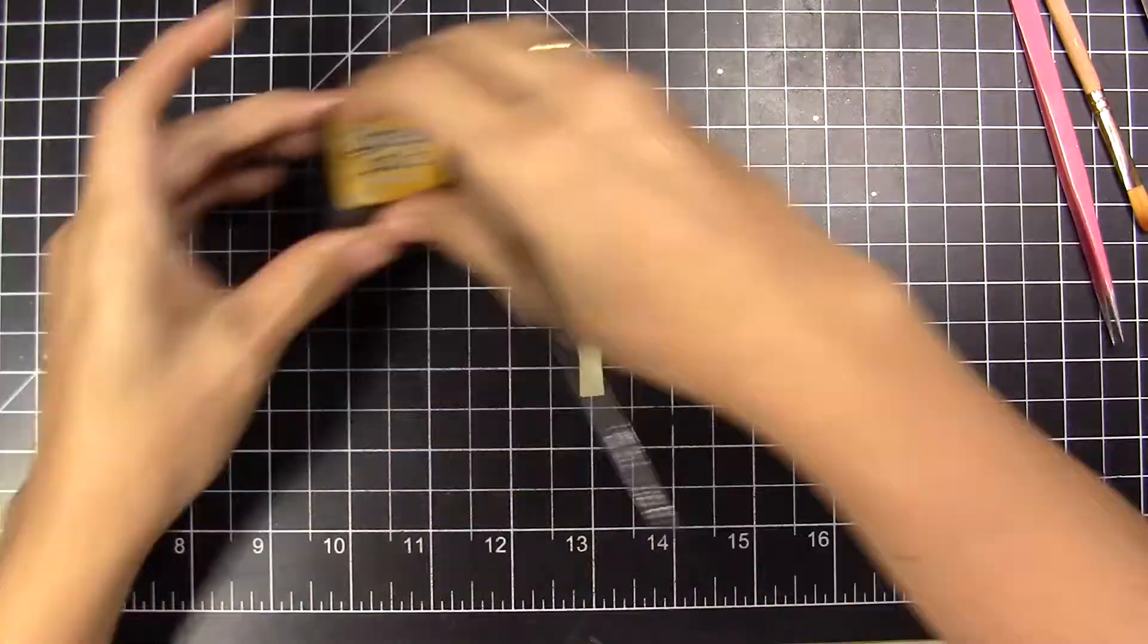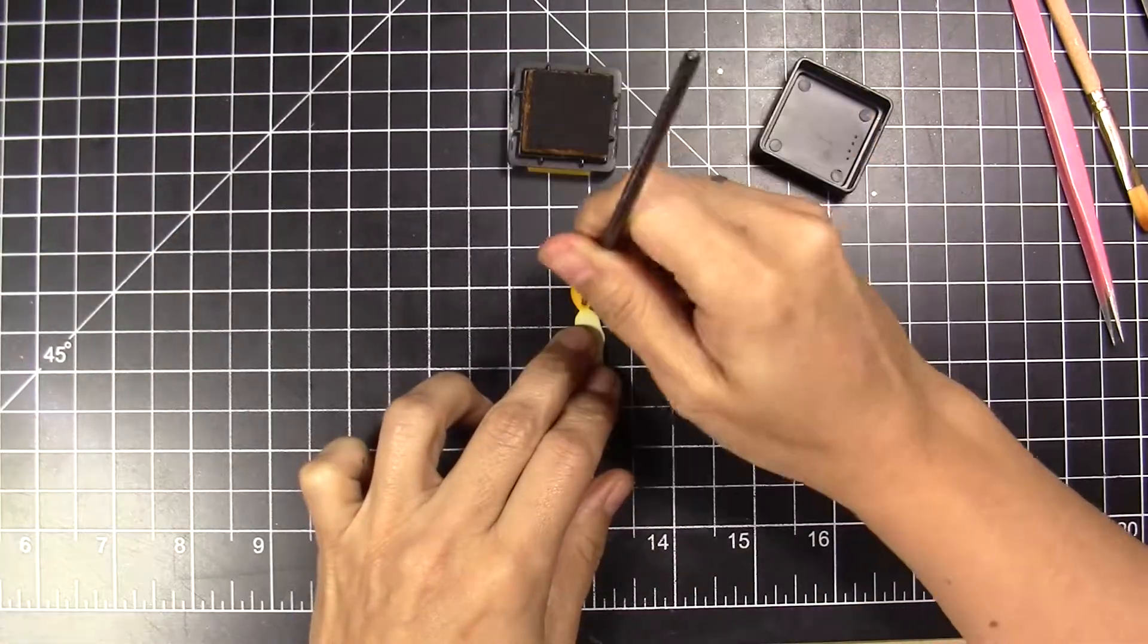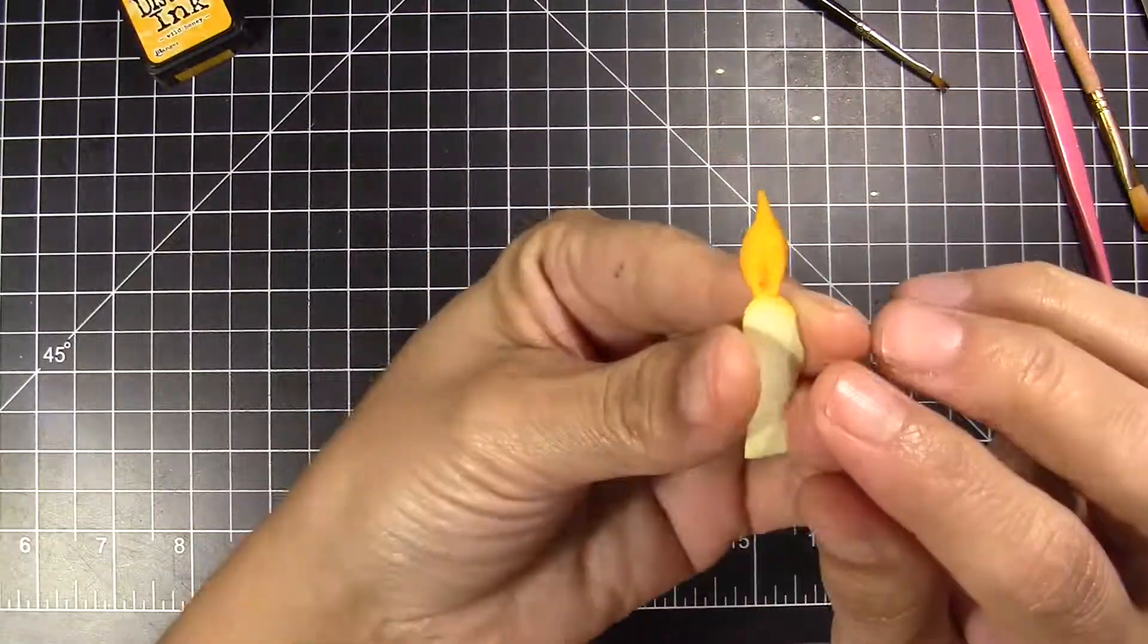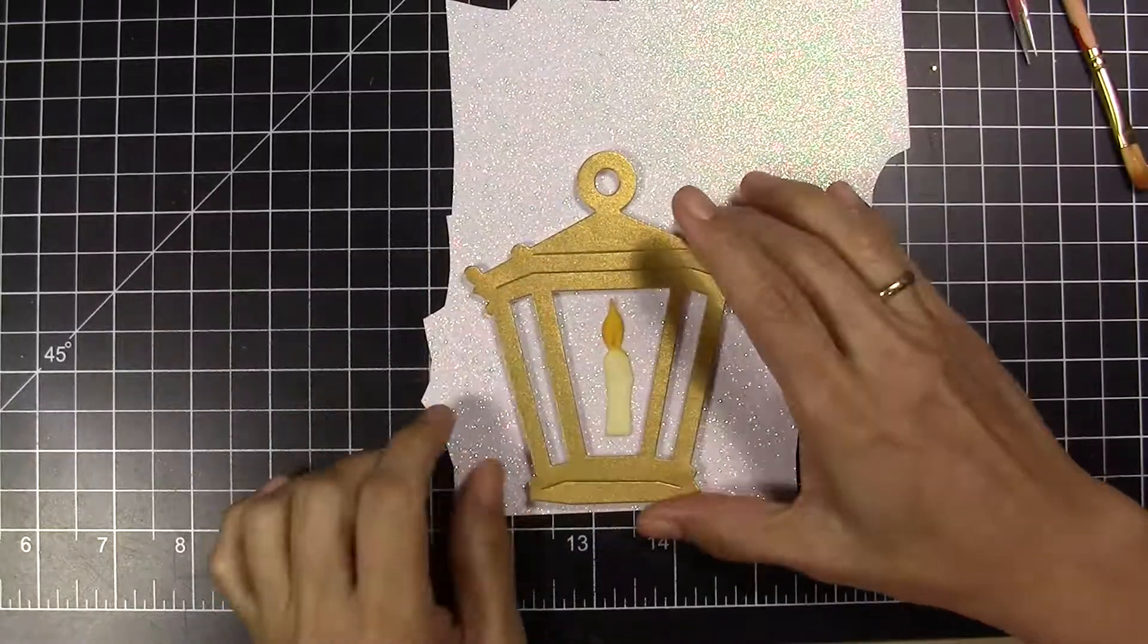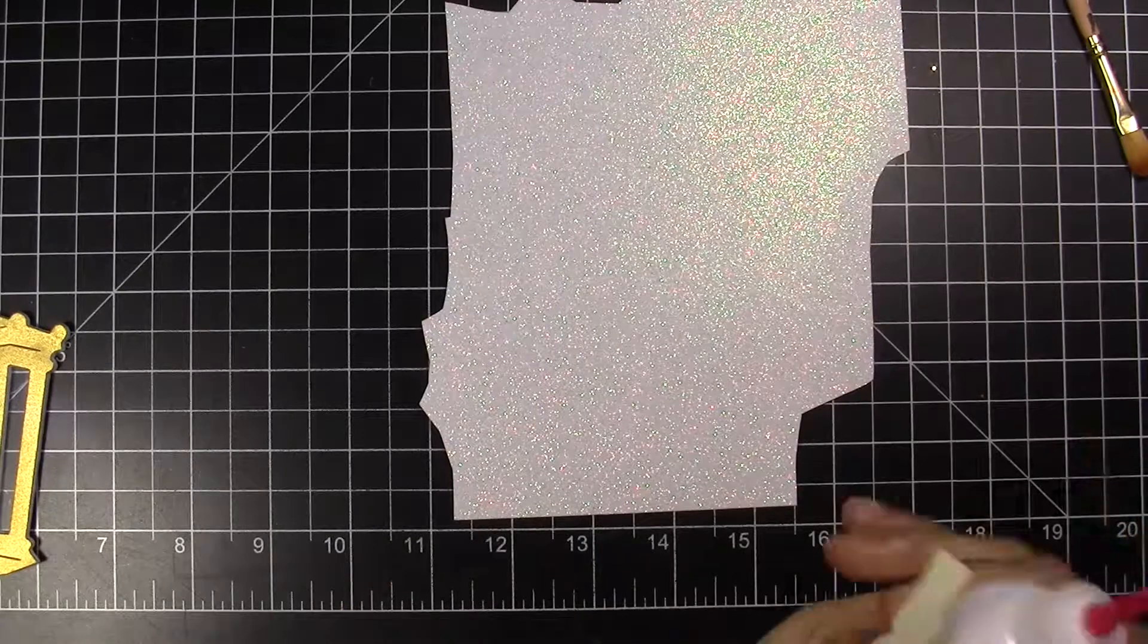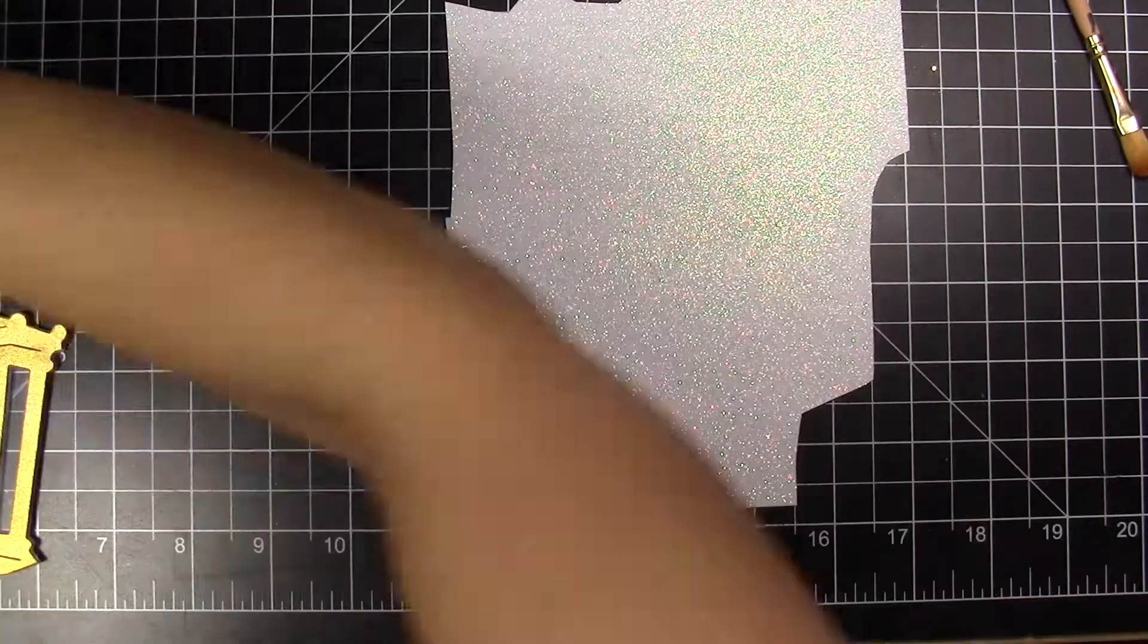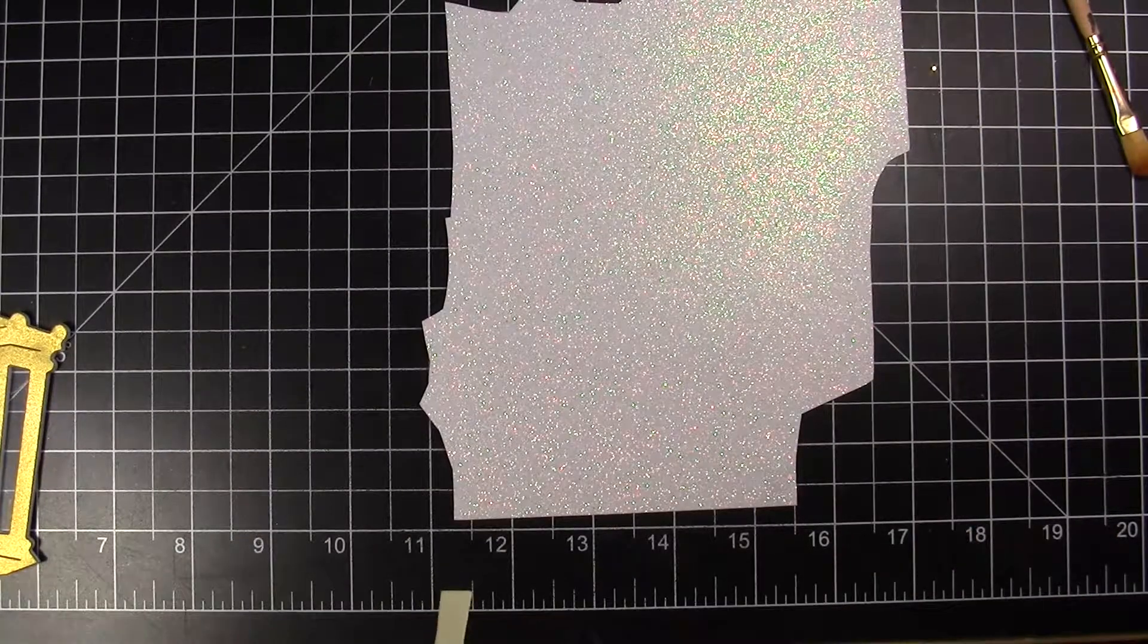After that, I'm going to glue the candle on the glitter white cardstock paper, and I'm going to finish the candle while it's there.